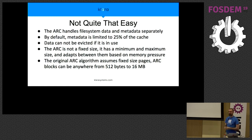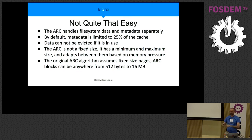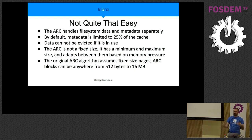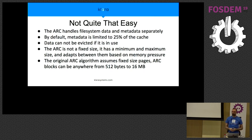Even then the algorithm wasn't perfect. The ARC now also considers metadata — especially in ZFS where you need hashes of every block and the tree of indirect blocks for copy-on-write — meaning there's a lot of metadata per block on disk, and you need that metadata to read files quickly. But at the same time you want your cache to contain actual data. By default, ZFS limits the amount of metadata it will keep in the cache to one quarter of the cache, though you can tune that depending on your workload.